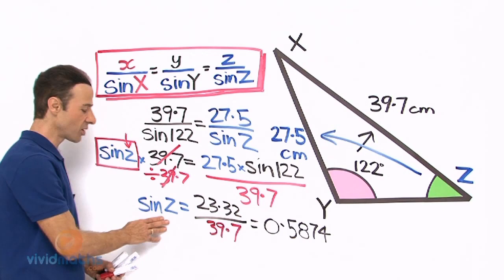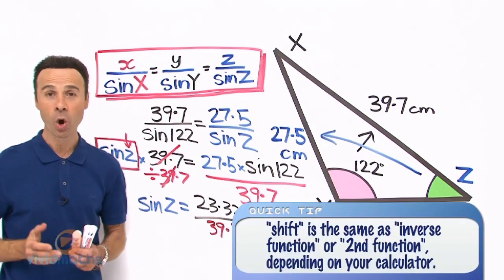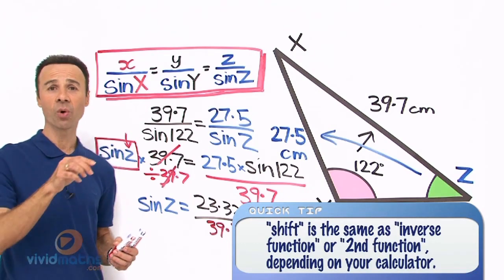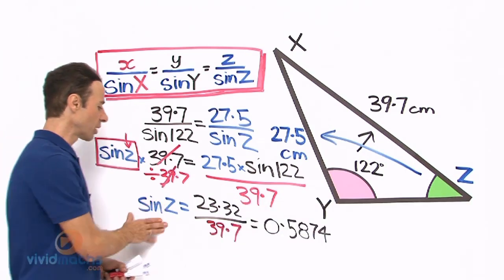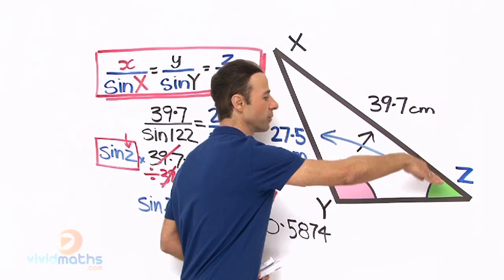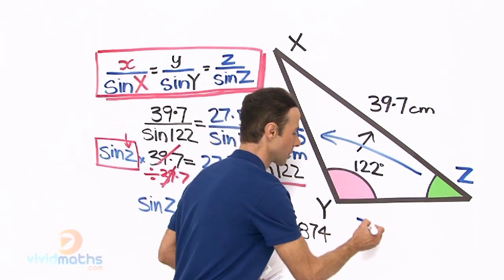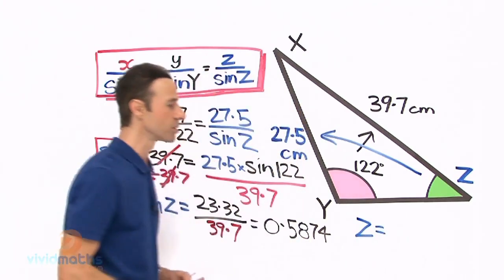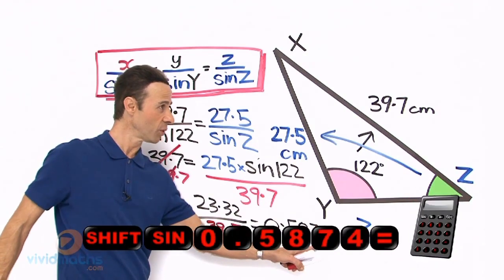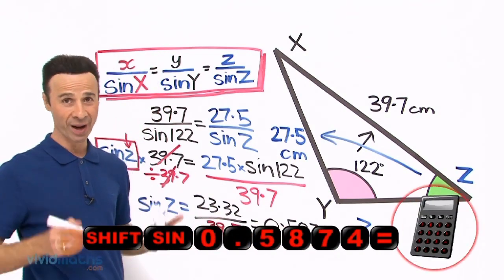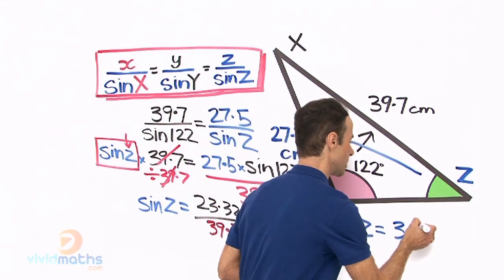To find Z, we use the inverse sine function on the calculator — shift, second function, or inverse, depending on your calculator. So we calculate inverse sine of 0.5874, and that gives us, rounded to the nearest degree, 36 degrees. That is our missing angle Z.